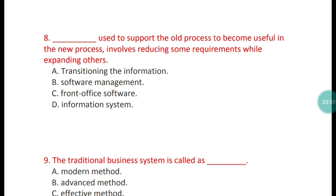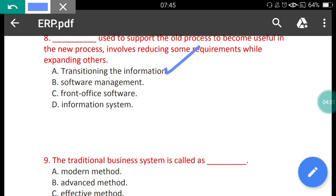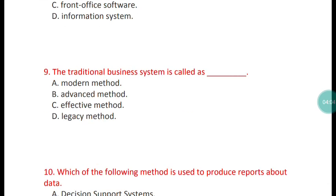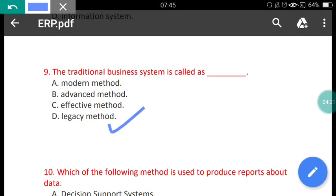Question 9: The traditional business system is called as what? The options are: modern method, advanced method, effective method, and legacy method. The correct answer is option D — the traditional business system is also called a legacy system.